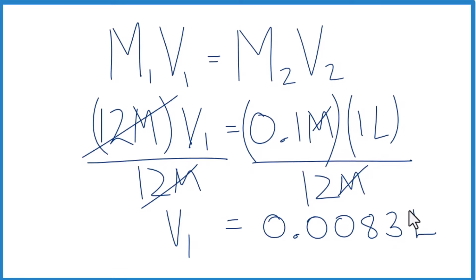One last way you could do this, if you didn't want to use the concentrated hydrochloric acid, you could use a stock solution. Say you had some 3 molar hydrochloric acid. So instead of 12 molar, you'd put 3 molar in, do the math, and you'd figure out how much you need to make your 0.1 molar solution of hydrochloric acid.